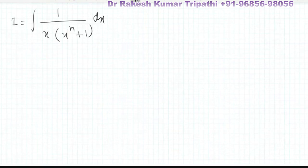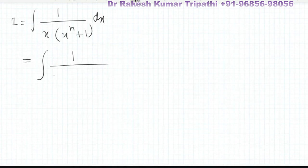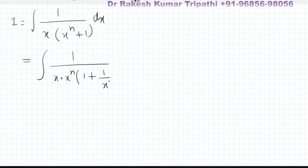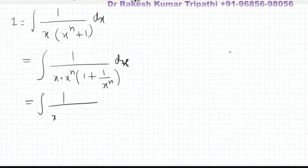We need to integrate 1/(x·(xⁿ+1)). There are various methods to integrate this, but if we take xⁿ common from the denominator, it can be written as 1/(xⁿ⁺¹·(1 + 1/xⁿ)). You can see this equals one upon x to the power n plus one, into one plus one upon x to the power n.